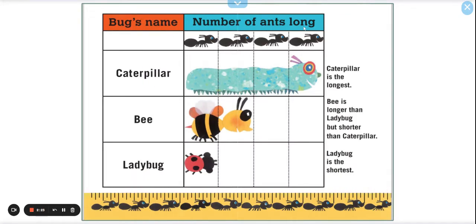Bug's name, number of ants long. So this is another graph, another table to show us, just in a different way to show us our data. So a caterpillar is one, two, three, four ants long. It's the longest. And I like this table a lot. It shows us more visually what we can see. We can see each ant and how long they are. And they even used vertical lines to show us too. The bee is longer than the ladybug, but shorter than the caterpillar. So our bee's in the middle. How many ants long is the bee again? Can we look at this graph and see? Yes, we could locate the bee and go all the way up and we see two ants. And the ladybug is the shortest. It's only one ant long.